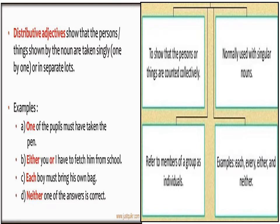For example: One of the pupils must have taken the pen — one person from a group has taken the pen. Either you or I have to fetch him from school. Each boy must bring his own bag — each individual boy in the class must bring his own bag. Neither one of the answers is correct. Hope you all have understood what distributive adjective is.